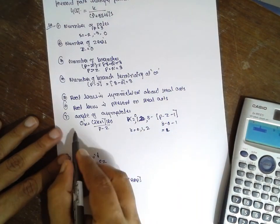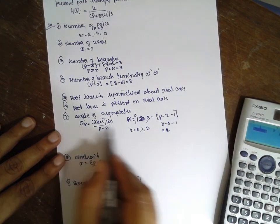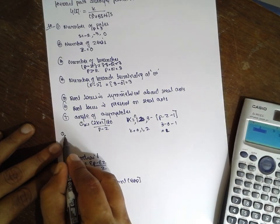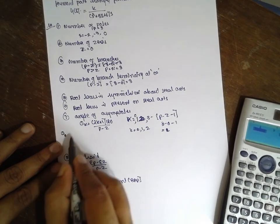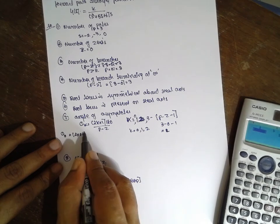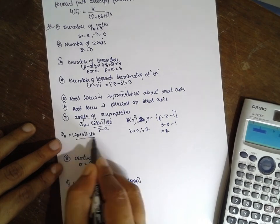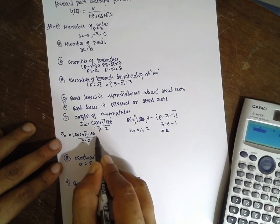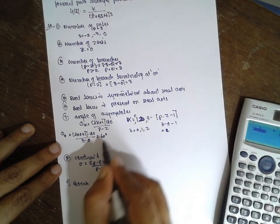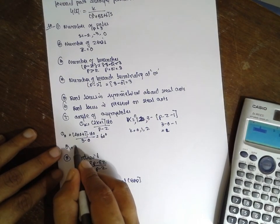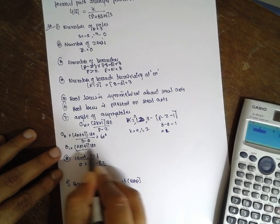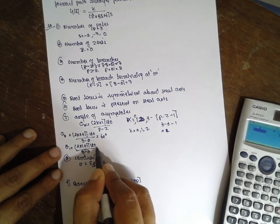If we substitute K equals 0, then theta equals (2×0 + 1) × 180 divided by (3 minus 0), which gives theta equals 60 degrees. For K equals 1, theta equals (2×1 + 1) × 180 divided by 3, which gives 180 degrees.